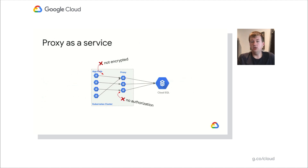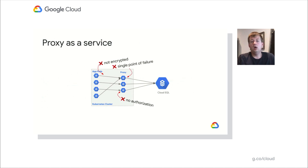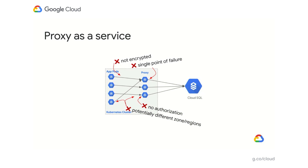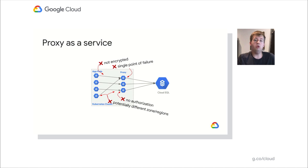Another disadvantage is no authorization — anyone on your cluster can connect to the proxy, which means anyone on your cluster can connect to Cloud SQL. This negates the advantage of Cloud SQL IAM authentication. There's also a single point of failure: if all applications are using a single deployment of the proxy and that deployment fails, all of your applications are no longer able to connect. Finally, the application and the proxy aren't necessarily running in the same zone or region, adding additional latency because your application has to jump first to the proxy and then to the Cloud SQL instance. By keeping the application and the proxy together, you can eliminate this and only worry about latency to the Cloud SQL instance.